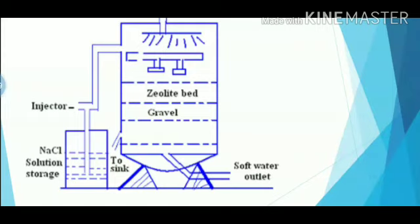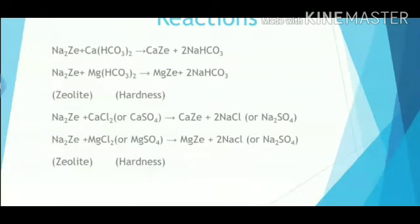Now we see the reactions. You can see here that the sodium zeolite bed is present there. When we supply the hard water, the calcium bicarbonate gets trapped into the zeolite bed and it converts into calcium zeolite or magnesium zeolite, while the sodium bicarbonate is removed through the sink and the water, meaning soft water, comes out from the soft water outlet.